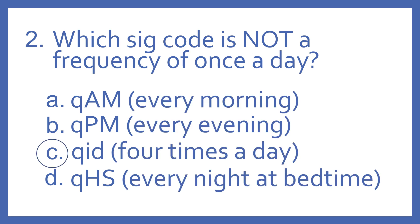And the answer is C, QID. That means four times a day. All the other ones are a frequency of once a day. QAM means every morning, QPM means every evening, and QHS means every night at bedtime.